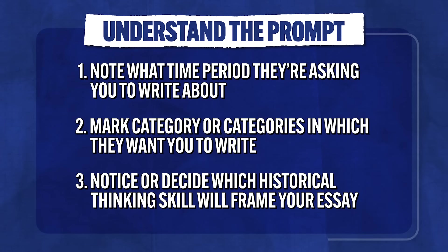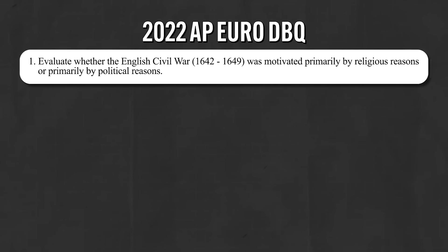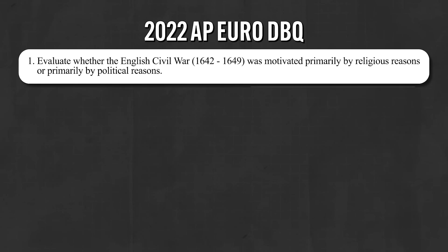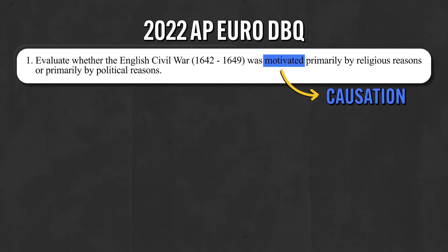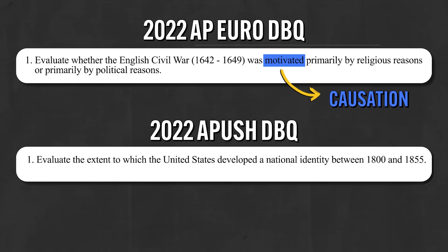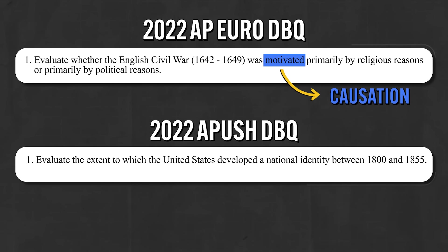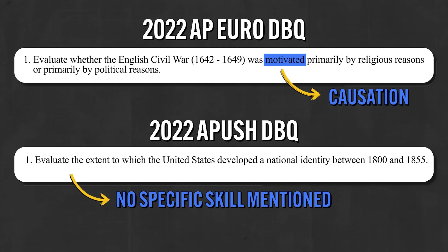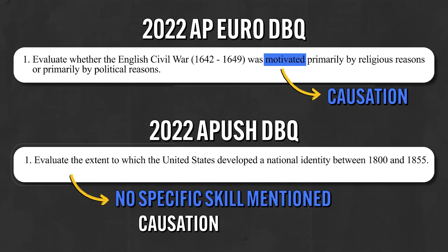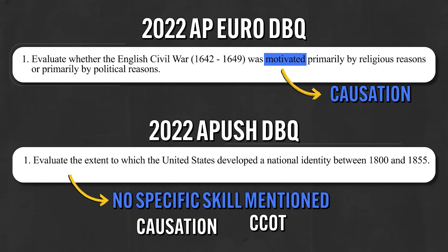The third thing you need to do is either notice or decide which historical thinking skill is going to frame your essay. Sometimes they'll just tell you what the skill is — for example, the AP Euro 2022 prompt explicitly states causation when it asks which reasons caused the English Civil War. But in the 2022 APUSH exam, the historical thinking skill is not explicitly stated, so you could write a causation essay, or continuity and change over time, or whatever is your writer's choice.